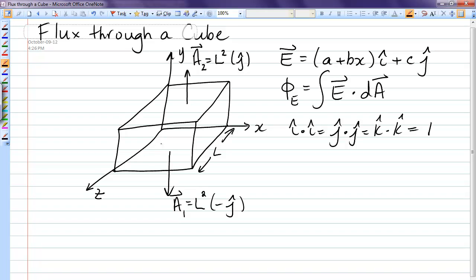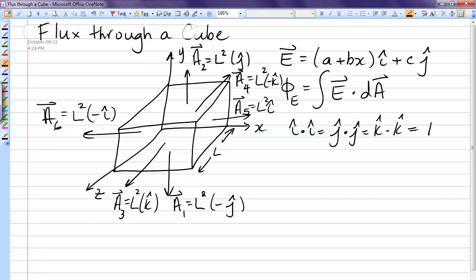A3 will be towards us here, the front face, and that also has area L squared and points in the k hat direction. The back face, we'll call a4, has area L squared, is negative k hat. And then a5 will be the right hand face, L squared i hat. And a6 will be the left hand face, L squared negative i hat.